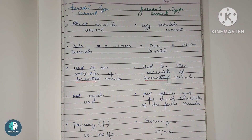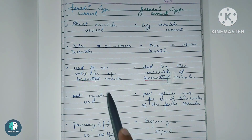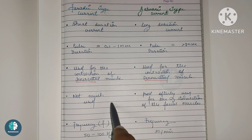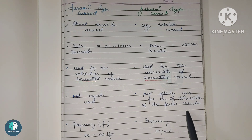The next point is based on facial muscle stimulation. The faradic type current is not much used for facial muscle stimulation. The galvanic type current is the one most often used for the stimulation of the facial muscles.